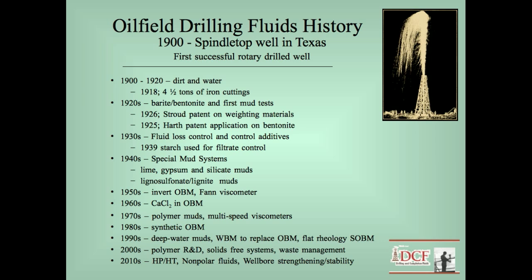So, the mineral of choice became barite, which is primarily barium sulfate. At about the same time in California, Hearth patented the use of a blend of barite and the clay bentonite as a weight material and thickening agent. The Hearth patent was eventually found to be in violation of the Stroud patent. The two companies, however, reached a compromise and merged together, forming the first drilling fluid service company called Barroid Mud Sales Company.